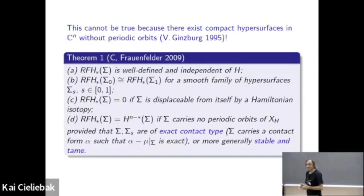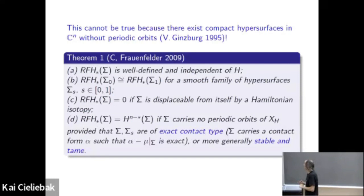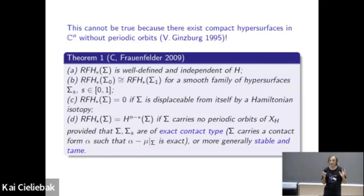We actually had to sit down and prove that the Lagrange multiplier is also not escaping to infinity. It turned out we could only do that under some additional geometric condition on the hypersurface. The conditions under which we could do it turned out to be precisely the conditions under which other people before us had proved existence of periodic orbits. The simplest condition where it works is if the hypersurface is of exact contact type, and a slightly more general condition is if it's stable and tame. In both of these cases, we get existence of periodic orbits — unfortunately known before.